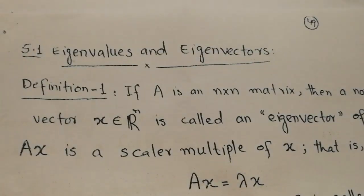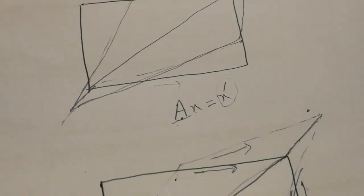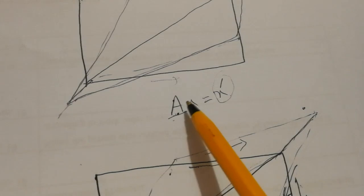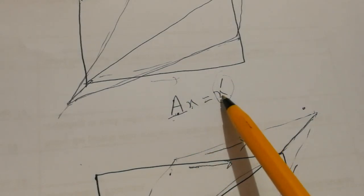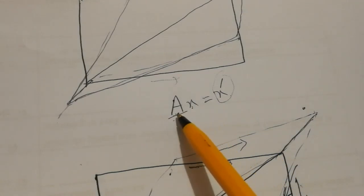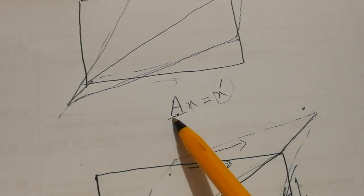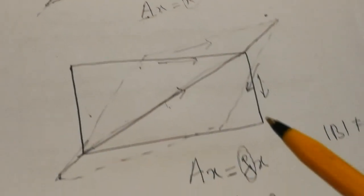As-salamu alaykum dear students. In this video of applied linear algebra I will discuss eigenvalues and the characteristic equation. Before going to eigenvalues, let me recall the concept of linear transformation. If we have a square matrix A and a vector x, and we multiply A times x, we get a new vector x prime. This process is called transforming vector x into x prime, and A is the square matrix representing a linear transformation.